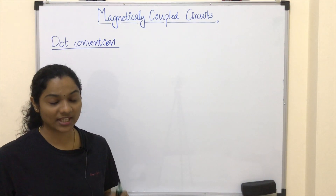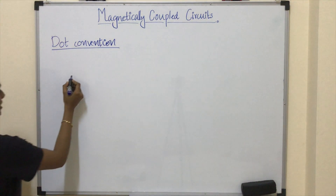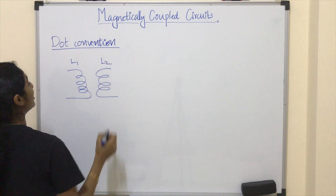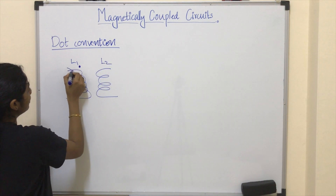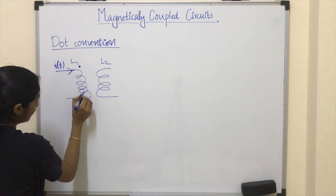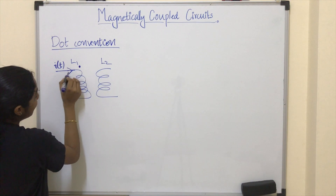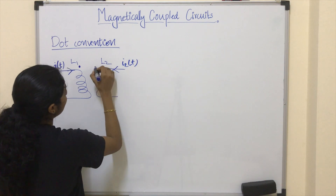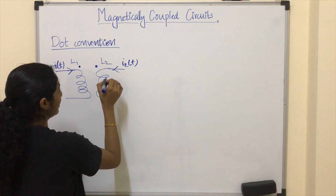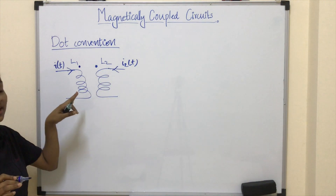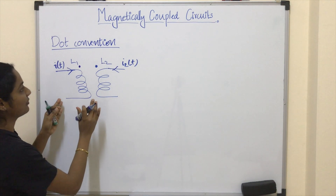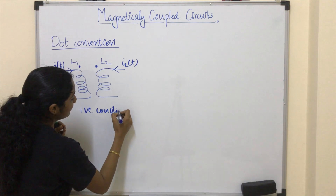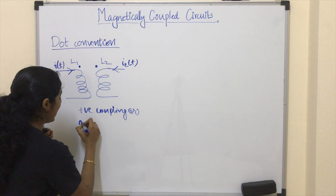In a simple way, we can explain dot convention as: consider two coils L1 and L2, and if we mark a dot on the entering side where current I(t) is passing through this coil, and we also mark a dot on the entering side of coil L2 where current I2(t) is passing, then we can say the mutually induced EMF is aiding the self-induced EMF — that is positive coupling.